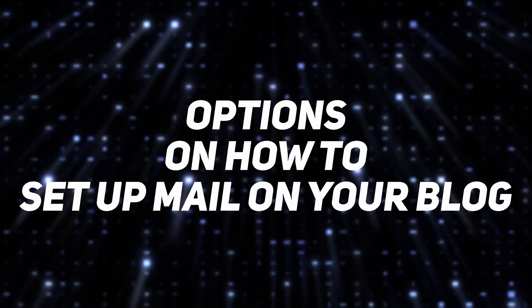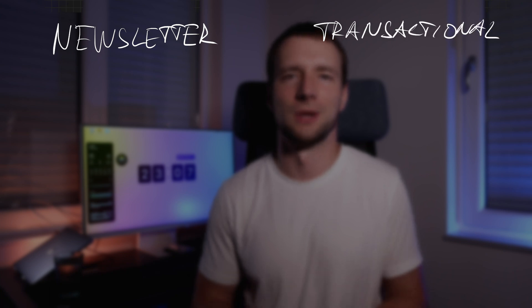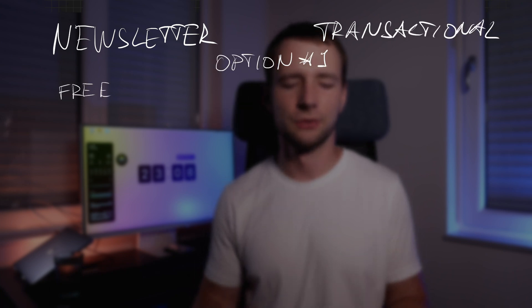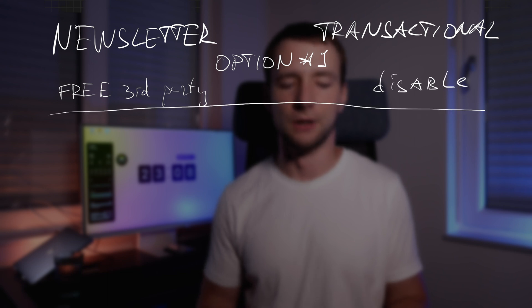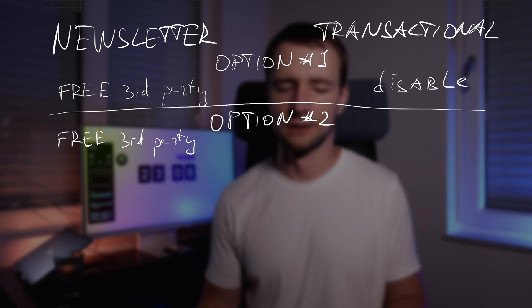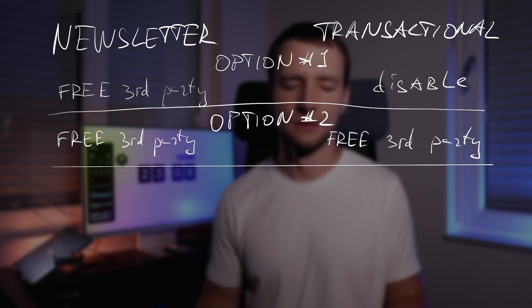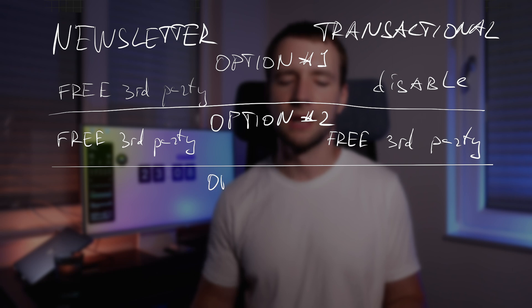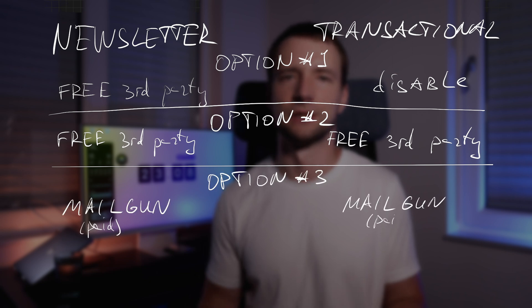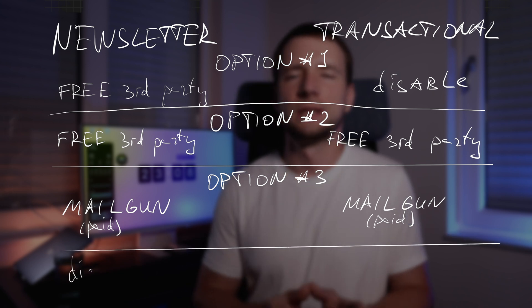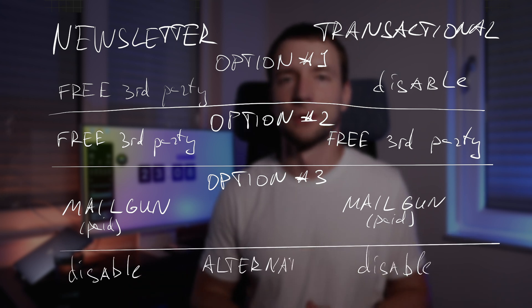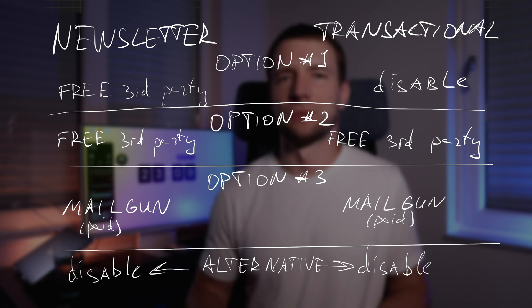There are three main options when setting up mail on your Ghost blog: use a free third-party service for the newsletter and disable Ghost mail completely; use a free third-party SMTP service for transactional emails; or use Mailgun for inbuilt Ghost newsletter and transactional emails. You can also fully disable all email functionality, which may be wise if you just want to focus on creating content — but having an active subscriber list in the future is 100% worth it.